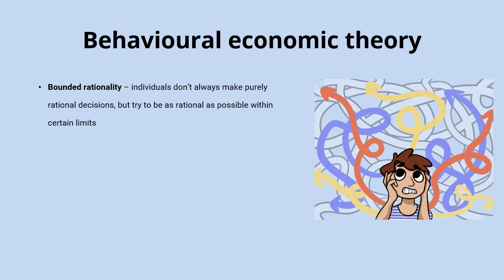Bounded rationality is where individuals don't always make purely rational decisions as we would predict from traditional economics, but they try to be as rational as possible within certain limits. For example, on the cereal aisle you might just grab a box that looks nice rather than fully and rationally optimising your utility based on all potential options available — that's rational to a degree but not fully rational in the purest economic sense.